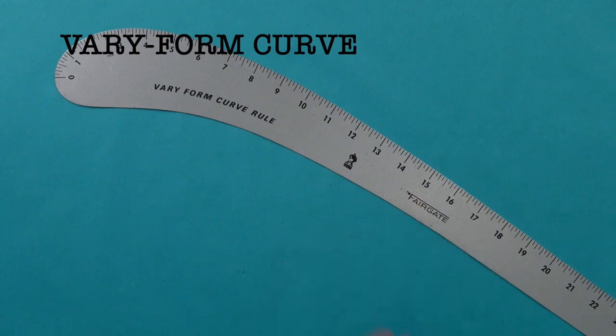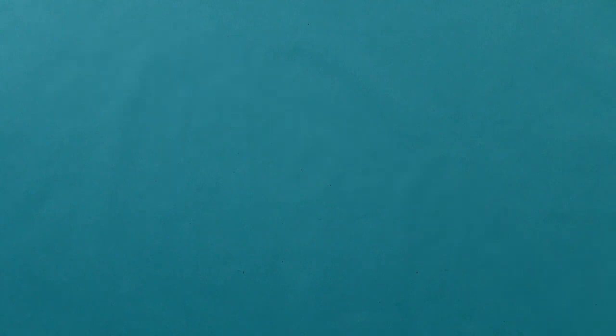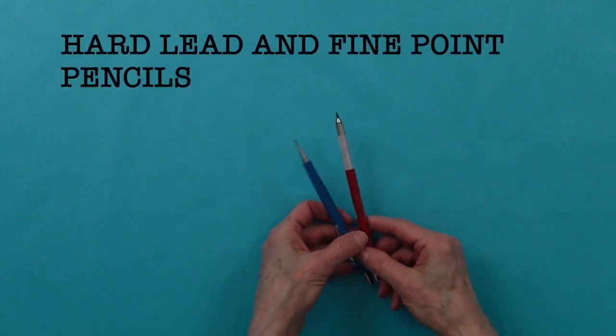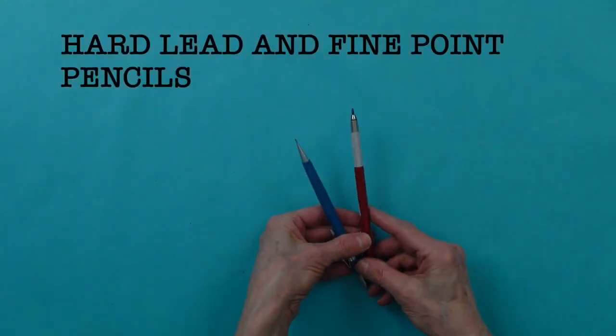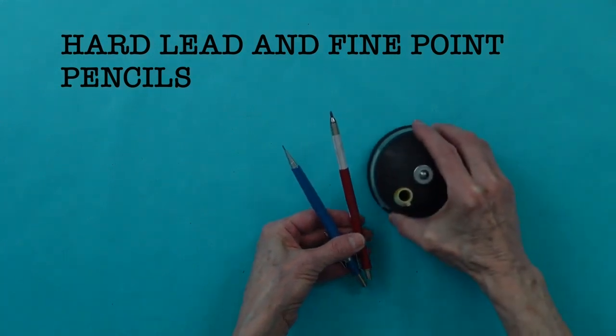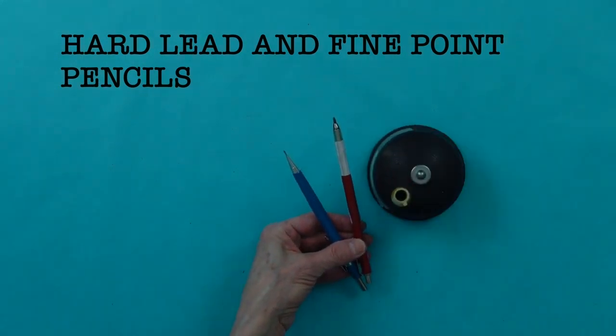And I like the Fairgate a lot because it's lightweight. Heavier ones become tiresome after a while. For muslin, I usually use markers now. It took me years to get used to that. But pencils are the best for making patterns because you want the lines to be very, very fine.